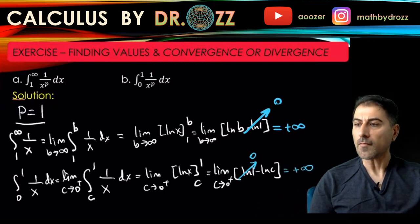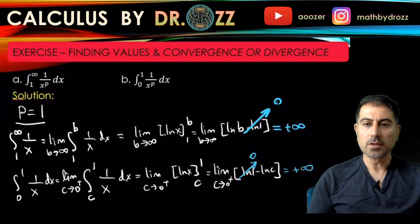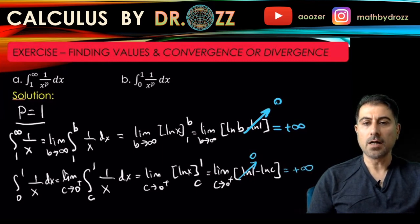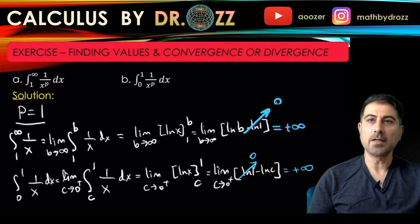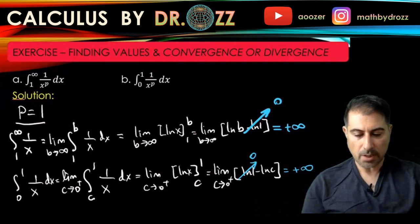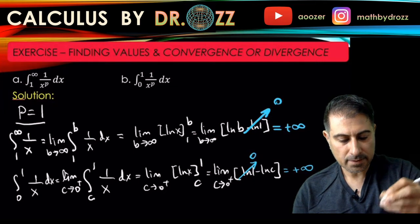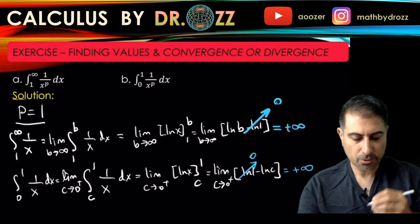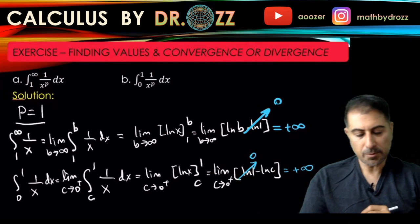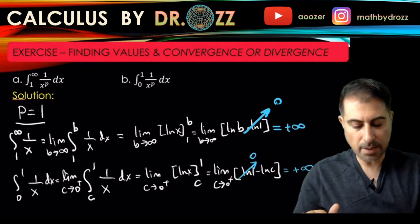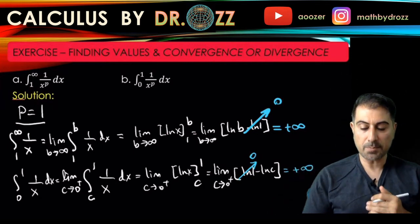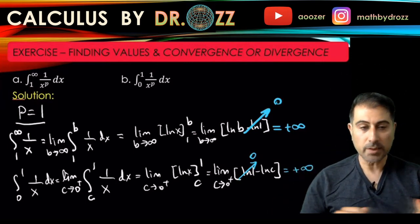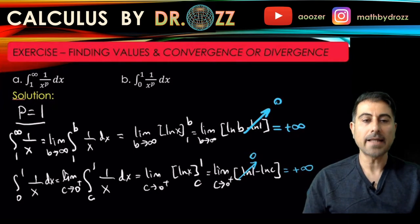So when p equals 1, both integrals diverge. I'll keep that result noted here, because we also have the p not equal to 1 case to work through.